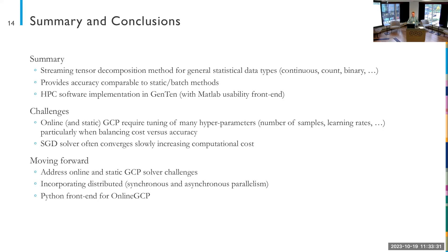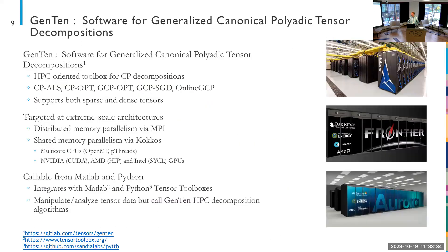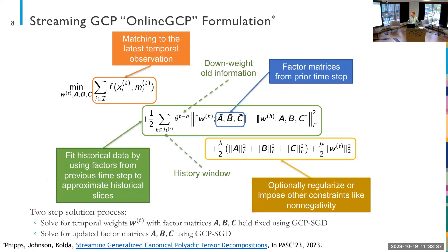The theta parameter is user-chosen: if you're most interested in newer data, set it to a smaller value; if you want to include everything, set it to one and it won't down-weight information. Regarding the relationship between the lambda parameter in CP models and the W parameter: W is essentially the lambda. If you think of doing an unweighted GCP of the whole tensor, the rows of the W factor matrix can be thought of as the weights of a time-varying CP decomposition.